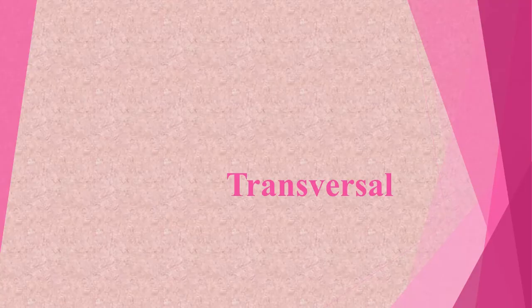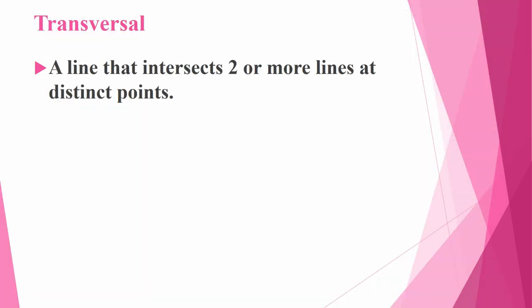Hello children, in this video we are going to see transversal. What is transversal? A line that intersects two or more lines at distinct points — that one line is called transversal.